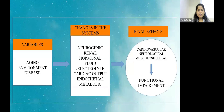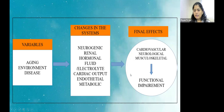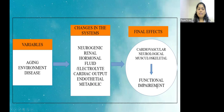There are different variables which affect various systems and ultimately lead to functional impairment in the body. Aging is one of the variables which affects the neurogenic, renal, hormonal, fluid or electrolyte, cardiac output, endothelial, and metabolic systems, which eventually affects the cardiovascular, neurological, and musculoskeletal systems, leading to functional impairment. This is the reason why we need to know the changes occurring in aging.